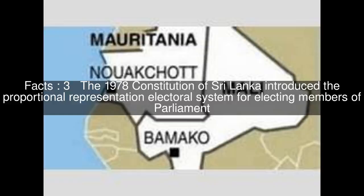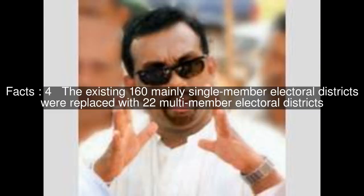The 1978 constitution of Sri Lanka introduced the proportional representation electoral system for electing members of parliament. The existing 160 mainly single-member electoral districts were replaced with 22 multi-member electoral districts. Nawalipitya electoral district was replaced by the Kandy multi-member electoral district at the 1989 general elections, the first under the proportional representation system.